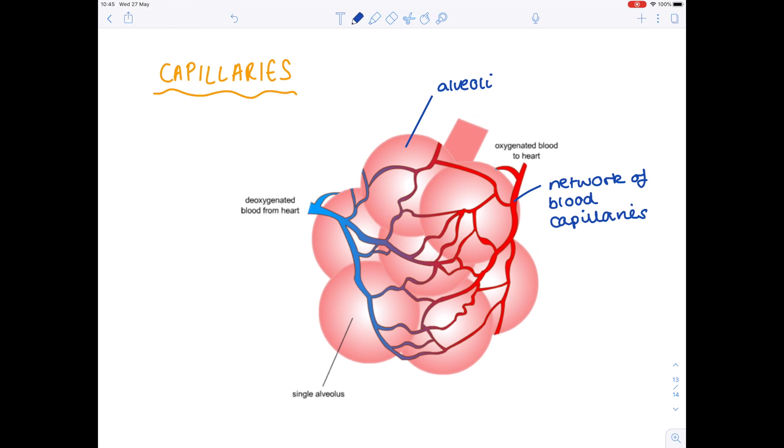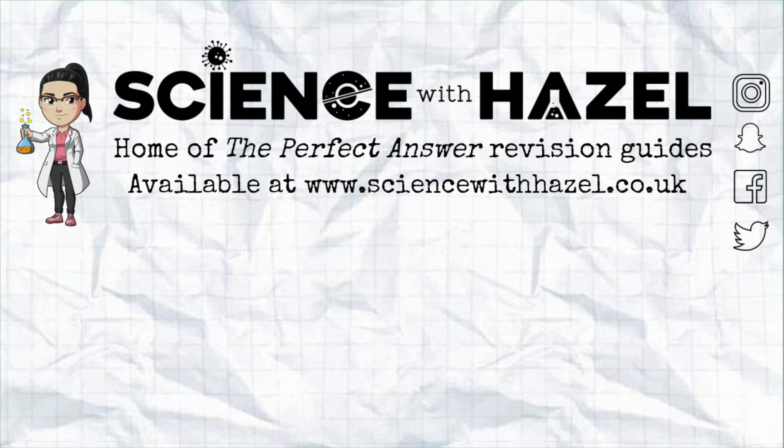So deoxygenated blood which has come from the heart will obviously be high in carbon dioxide, low in oxygen. Carbon dioxide will leave the blood capillary by diffusion and oxygen will enter the blood capillary also by diffusion so that it can then be transported to the heart.